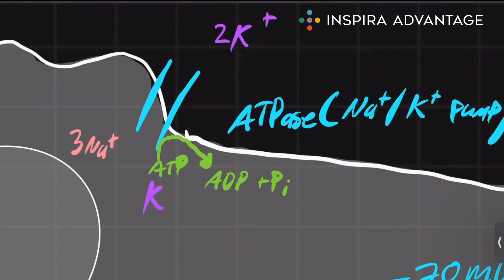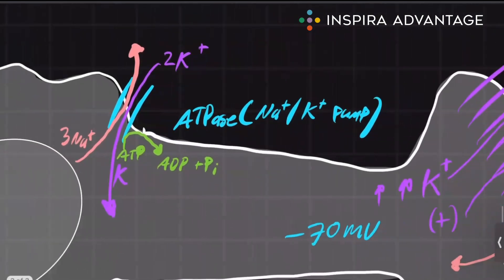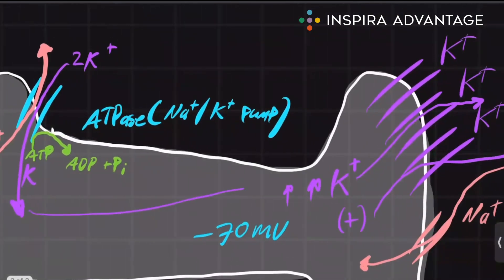So the energy that ATP brings allows us to pump against a gradient, bringing those two potassium in and getting rid of the three sodium. This potassium then is able to eventually move on out of those leak channels that we drew earlier.